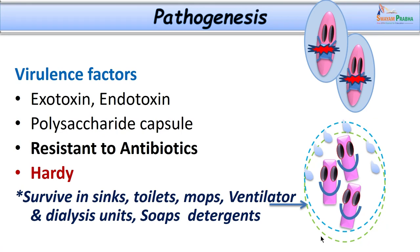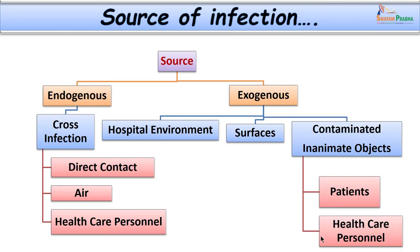The source of infection can be endogenous — the patient harboring organisms on their own body — or exogenous. Endogenous sources include cross infections from the flora of adjacent patients through direct contact, airborne route, or via healthcare personnel. Exogenous sources include the hospital environment, surfaces of healthcare facilities, contaminated inanimate objects, and fomites, which can transfer organisms from patient to patient.